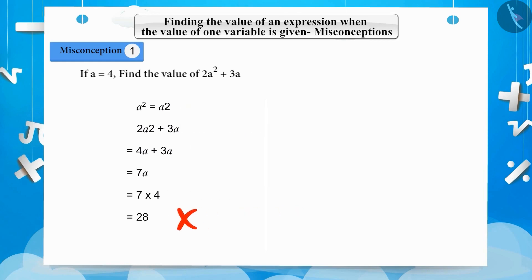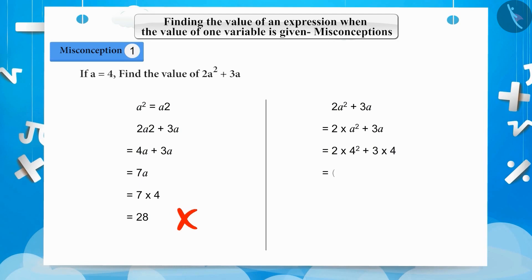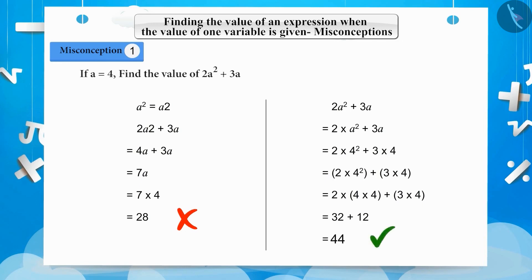Let's see the correct solution. 2a squared plus 3a — we replace a with 4: 2 multiplied by 4 squared plus 3 multiplied by 4. We first solve 2 by 4 squared, then multiply 3 by 4, then add them both. This gives 2 multiplied by 4 multiplied by 4 plus 12, equals 32 plus 12. Adding 32 and 12 we get 44, which is the correct answer.